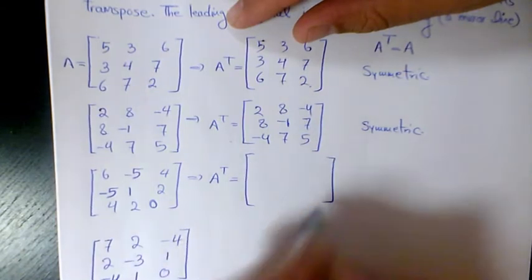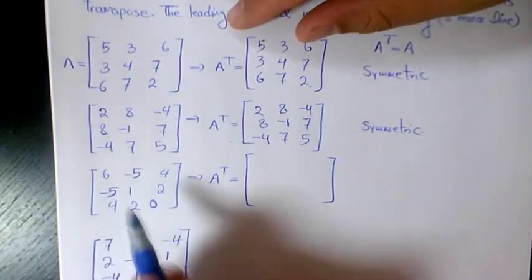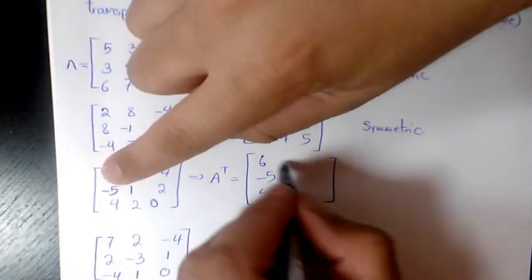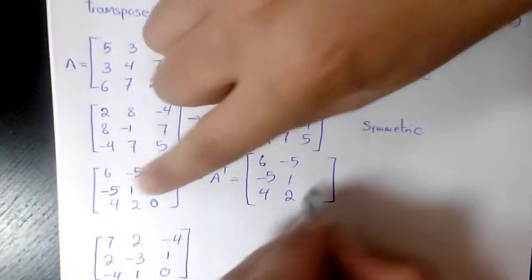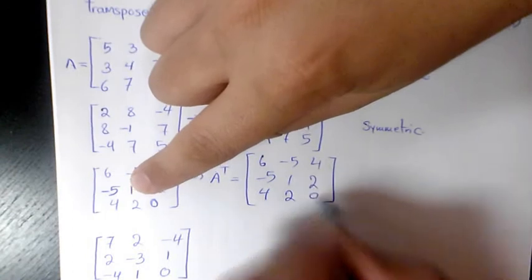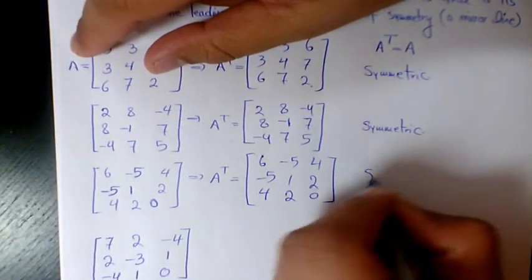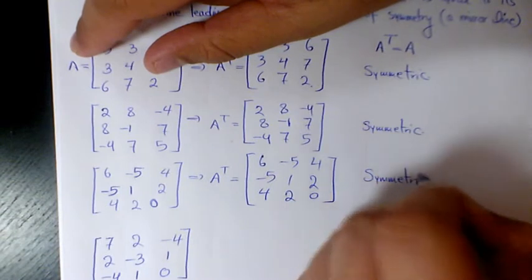That's 3 by 3, so it's a square matrix. It's going to be 6, negative 5, 4; negative 5, 1, 2; 4, 2, 0. Now if we compare it, that has exactly the same thing, so we call it a symmetric matrix.